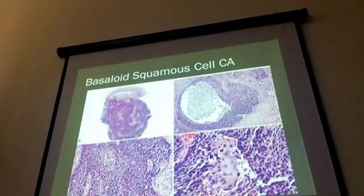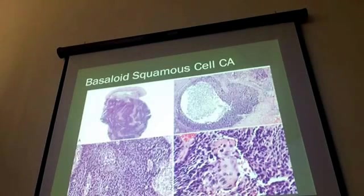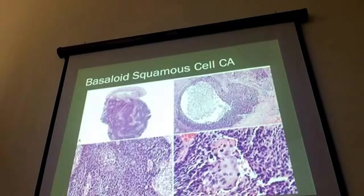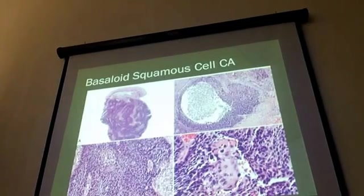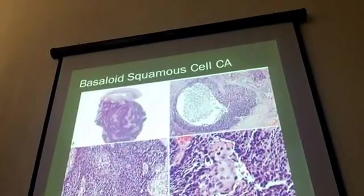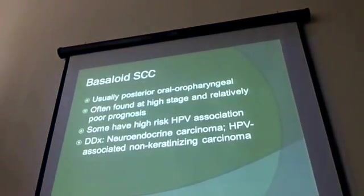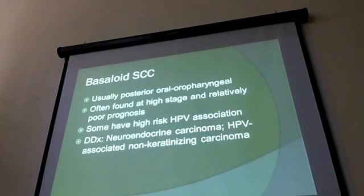Basaloid squamous carcinomas are an important subtype. These have a very bluish organization with paradoxical central keratinization, and may have a little peripheral palisade, although not always. They're important to recognize because they have a slightly worse prognosis and are more likely to present with nodal metastases at an early point in time. The differential diagnosis will often include neuroendocrine carcinoma. There are a few with an HPV association, but sorting that out is still in process.